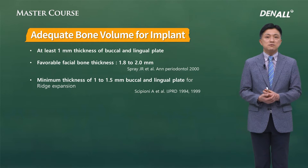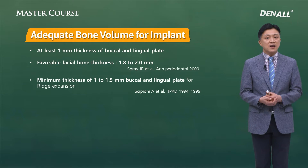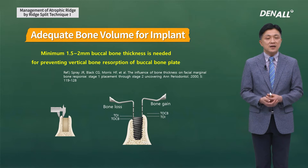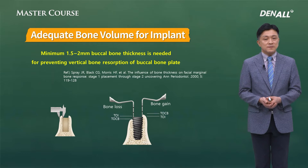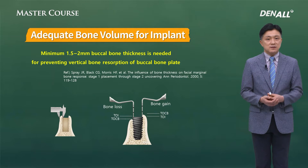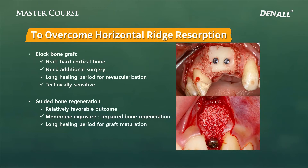How much is sufficient bone for implant placement? In the case of upper posterior, there needs to be at least 1 mm thickness of buccal and lingual plate. In 2000, Spray said the appropriate bone amount is 1.8 to 2 mm. For ridge expansion, you need at least 1 to 1.5 mm of buccal or lingual plate. Therefore, there needs to be at least 1.5 to 2 mm of buccal or lingual bone to prevent buccal bone resorption — that is the common understanding.